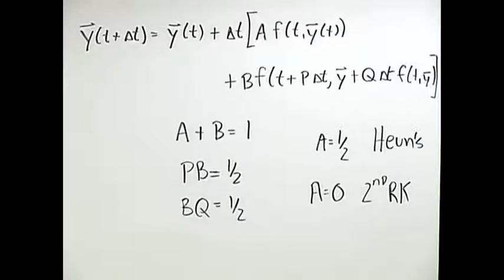It's like sample the slope here, sample the slope here, kind of take an average, shoot across. That's it, get you a better approximation.